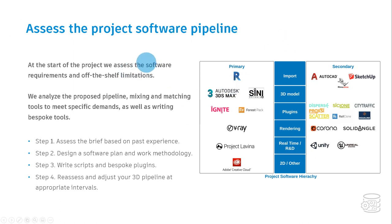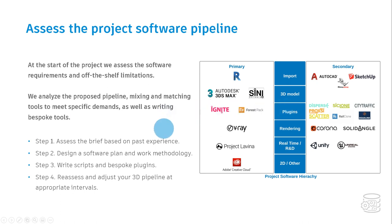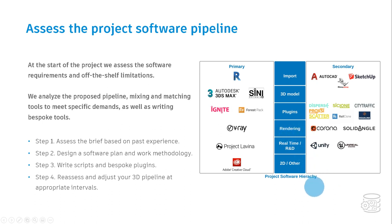Looking at our primary tools on this project: everything comes in via Revit — it's a client requirement that all consultants must use Revit. Some will also be using AutoCAD or other tools. 3D modeling is all done in 3ds Max, plus we're using the Sinai tools. Plugins we're using include Ignite extensively, plus Forest Pack. Rendering is all done in V-Ray. In real time we are using Project Lavina, which I'll talk about in a bit. For 2D we're using Adobe Creative Cloud. Secondary tools on a project basis include Corona, Arnold, and we also use Unity and Unreal Engine.